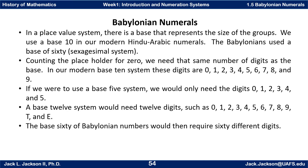In a place-value system, there's a base that represents the size of the groupings. We use a base of 10 in our modern Hindu-Arabic numerals. The Babylonians, however, used a base of 60, so it's called a sexagesimal system.